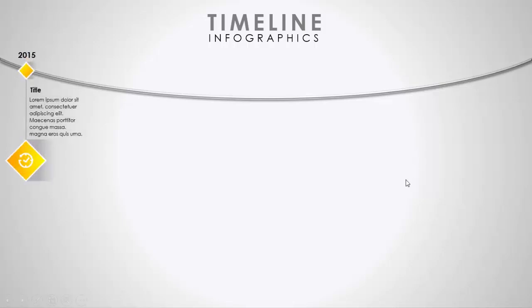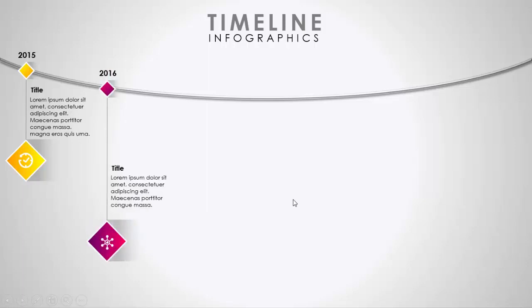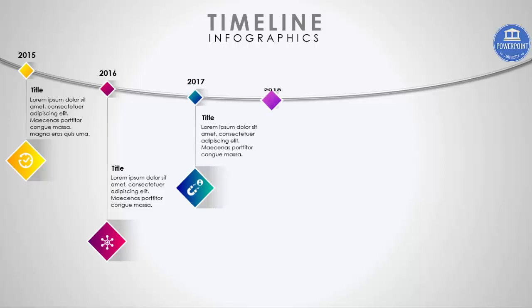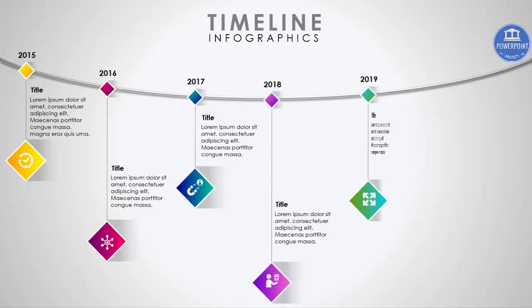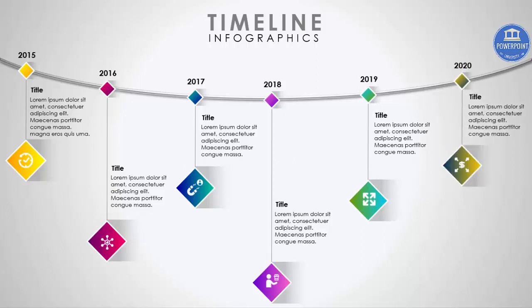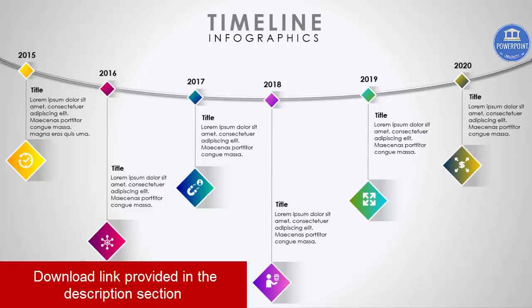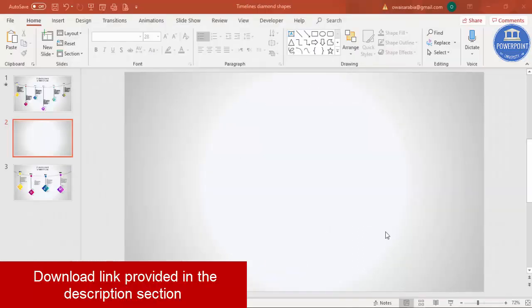In this tutorial I'm going to show you a timeline infographic slide in PowerPoint. This is how the slide works: there's something like a string, and when I click, the first option comes with the year. At the bottom you can see I've added some icons and a shadow effect. You can add a title and more details to the year, then it will show 2016, 2017, 2018, 2019, and 2020.